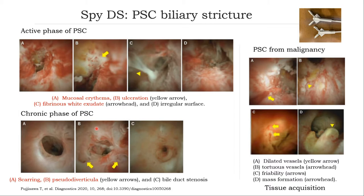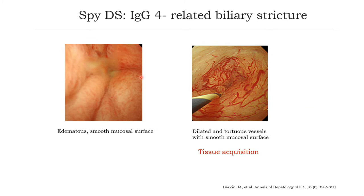In acute and chronic phases of PSC, if you put the SpyGlass cholangioscope inside, you can see more detail in the process of inflammation or tumor, and also benefit from vision-guided biopsy. The intraductal image from SpyGlass DS will show you the picture of IgG4-related biliary disease: edematous, smooth mucosal surface with dilated and tortuous vessels that may look like tumor, but the mucosa is very smooth. This pattern is characteristic for IgG4 cholangioscopy.